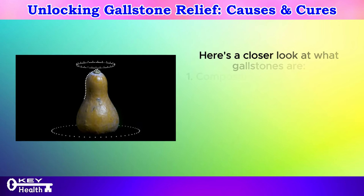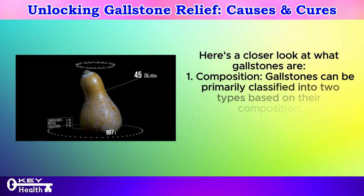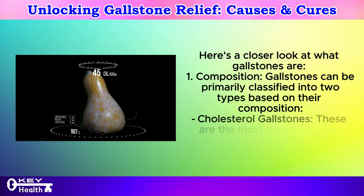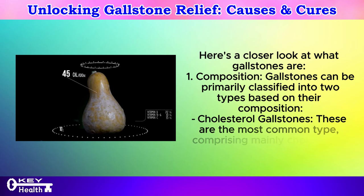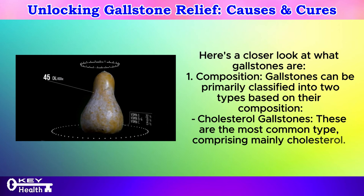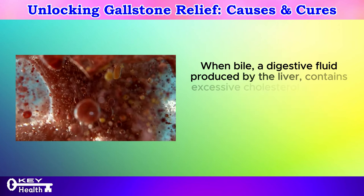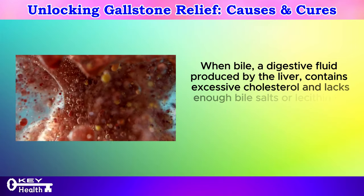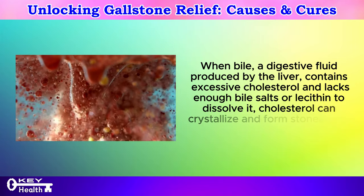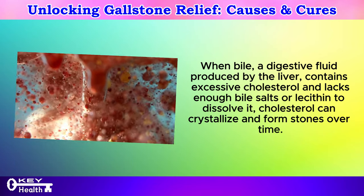Here's a closer look at what gallstones are. Composition: Gallstones can be primarily classified into two types based on their composition. Cholesterol gallstones are the most common type, comprising mainly cholesterol. When bile, a digestive fluid produced by the liver, contains excessive cholesterol and lacks enough bile salts or lecithin to dissolve it, cholesterol can crystallize and form stones over time.